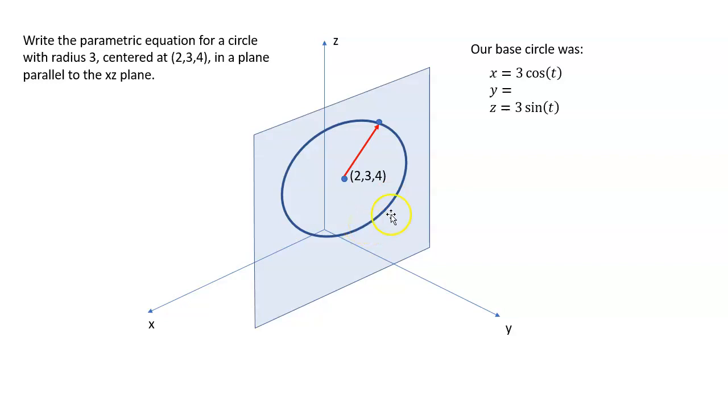Our base circle had an x of 3 cosine t, a z of 3 sine t, and we weren't really concerned about y. But now we need to shift our whole circle up so that the base point is at (2, 3, 4), and we need our rotation to be happening around (2, 3, 4). We can do that just by taking our equations and shifting them by the amount of the center point. So the base x value is 2, because that's where my center is. But then I am adding on—think of it as a combination of displacements. The displacement up to the center is (2, 3, 4), and then we have an additional displacement off of that to get to the circle, which is the adding 3 cosine in the x and adding 3 sine in the z.